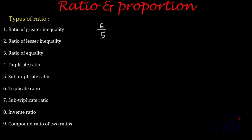The property of this ratio is: if I add 1 to both the numerator and denominator, or antecedent and consequent, then 6 by 5 would become 7 by 6. The value of 6 by 5 is 1.2 and the value of 7 by 6 is 1.16.